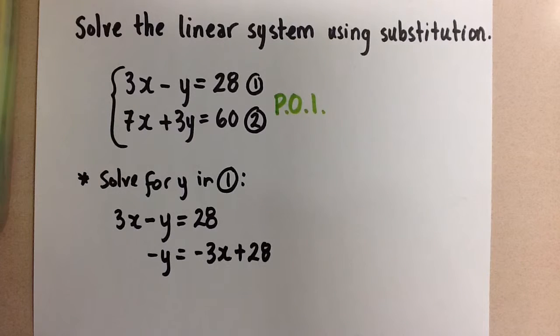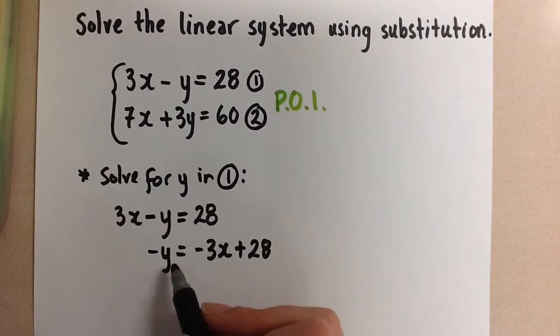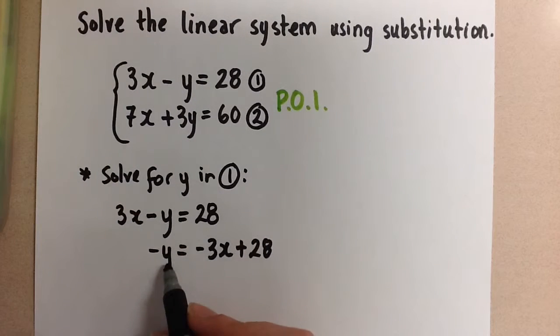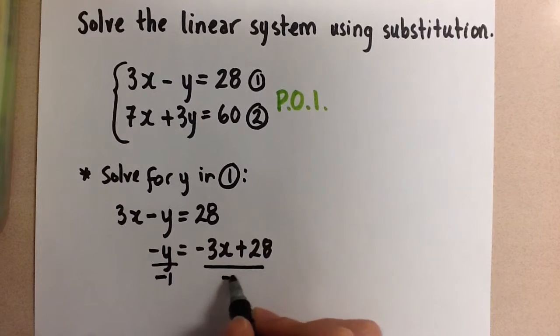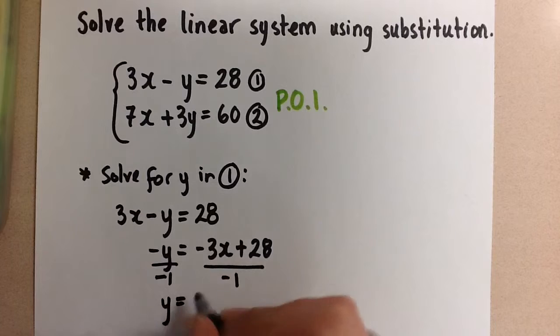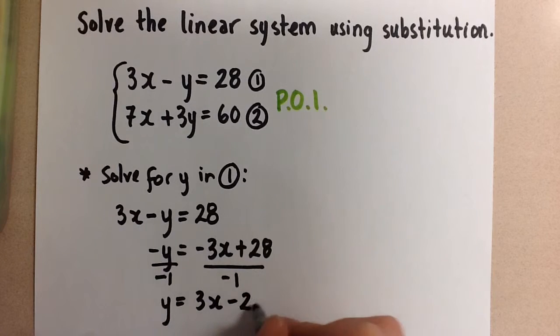If you don't remember how to solve linear equations, then link over to my video on solving linear equations, and you'll learn how to isolate variables like we are doing here with a little more time and attention. Now the y is not by itself. It still has that coefficient of negative 1, so I'm going to divide by negative 1 on both sides to get the y by itself. And we're left with y equals 3x minus 28.